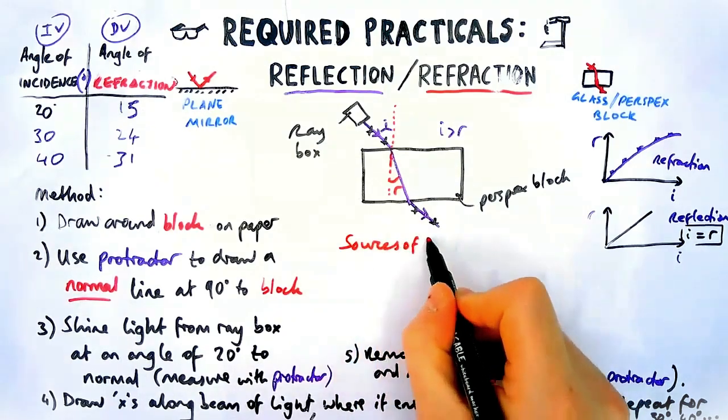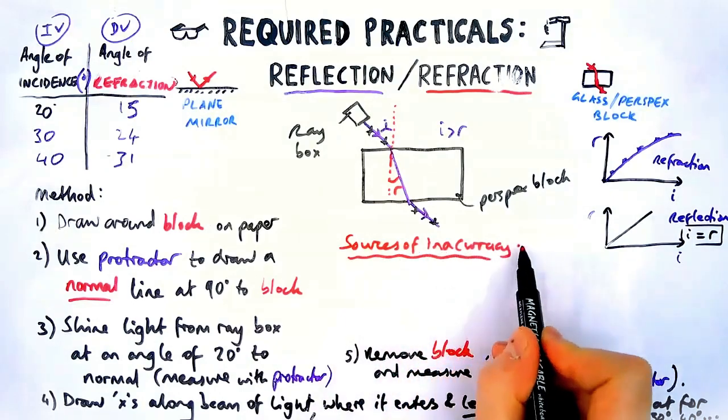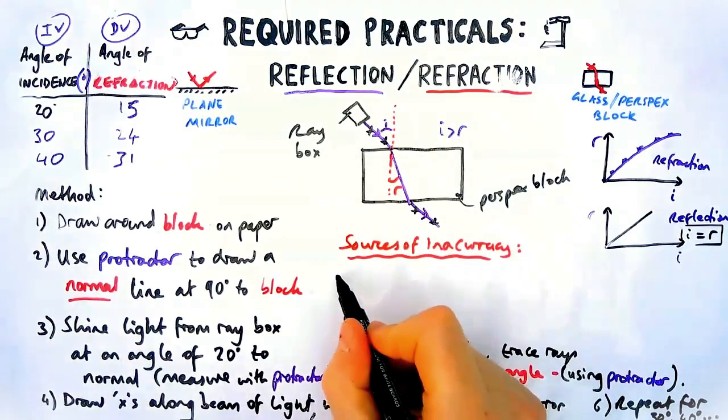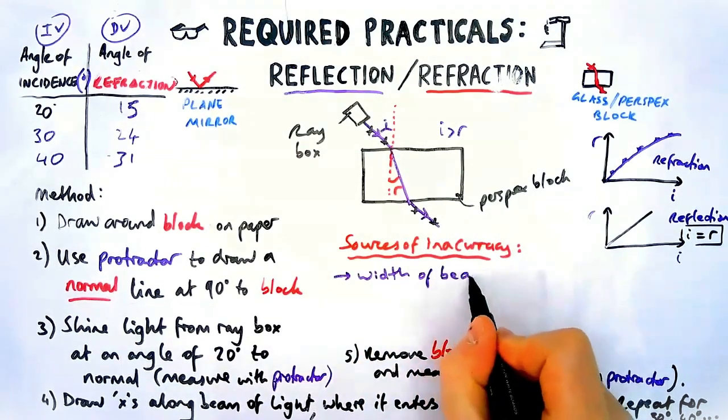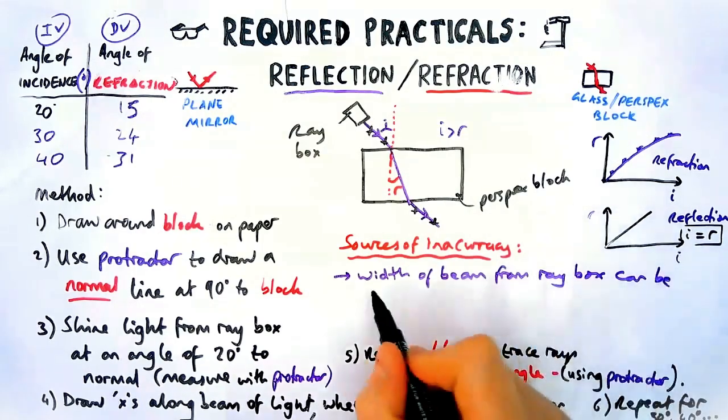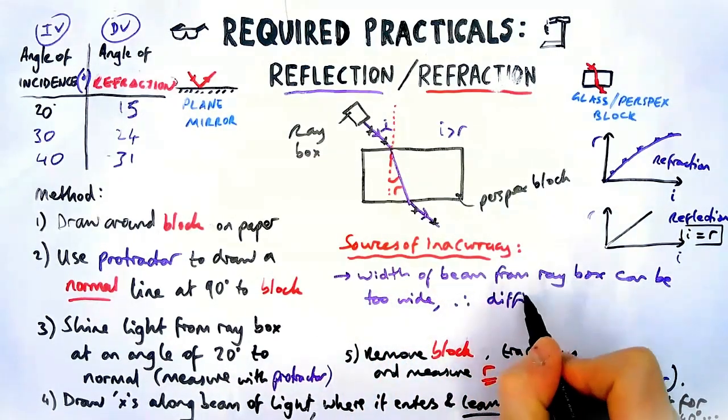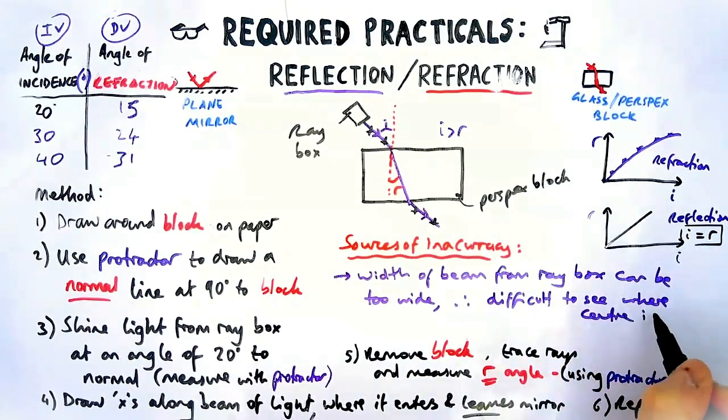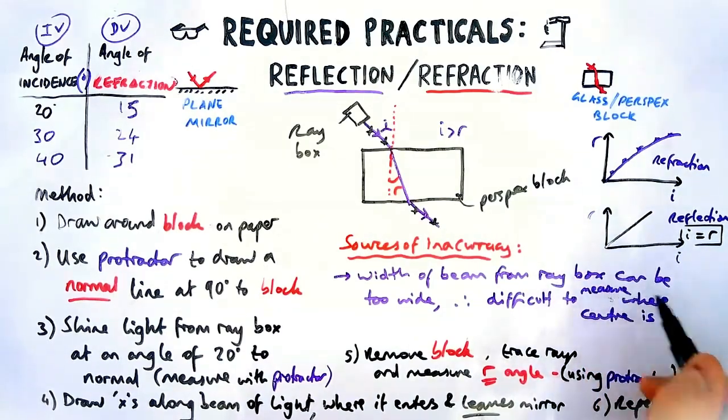Often gets asked in questions about these sorts of practicals are sources of inaccuracy. Where might you have inaccuracies? So the big one is that the width of the beam from the ray box. If you've ever used these, they can be quite thick. They're not actually that thin, especially when you're using a protractor. So it can be too wide, which means it's difficult to see or to measure where the center of the beam is. So to measure the center of the beam, that needs to be like top of the priority list so we can measure the angles correctly. However, if we can't do that, then that is a big problem.